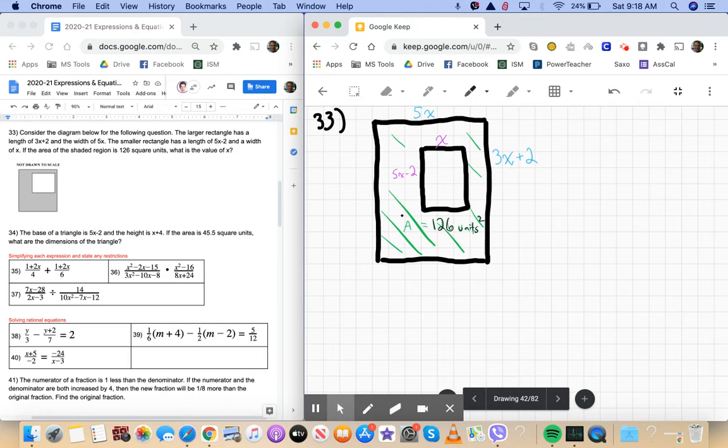Alright, so if I know the shaded area, that would be that whole rectangle's area, and then I'll just subtract this inner rectangle, and that will give me that shaded region. Then I can set up my equation, right?